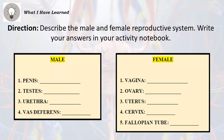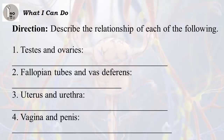Direction: Describe the male and female reproductive system. Write your answers in your activity notebook. Male parts: 1. Penis, 2. Testes, 3. Urethra, 4. Vas Deferens. Female parts: 1. Vagina, 2. Ovary, 3. Uterus, 4. Cervix, 5. Fallopian tube. Direction: Describe the relationship of each of the following. 1. Testes and ovaries, 2. Fallopian tubes and vas deferens, 3. Uterus and urethra, 4. Vagina and penis.